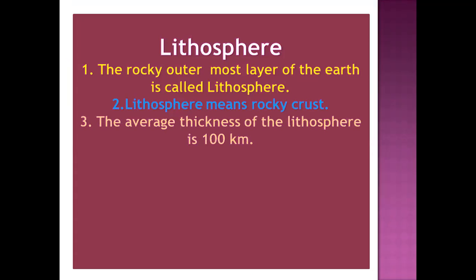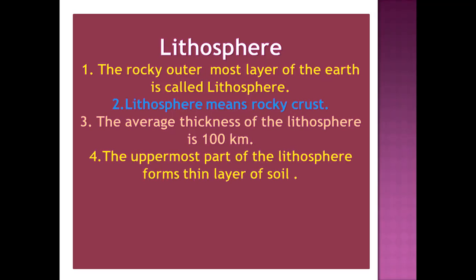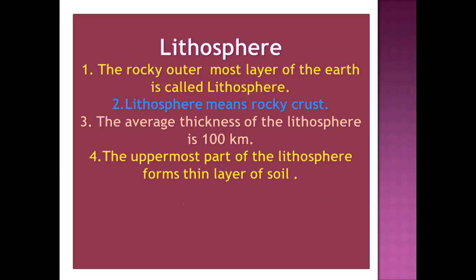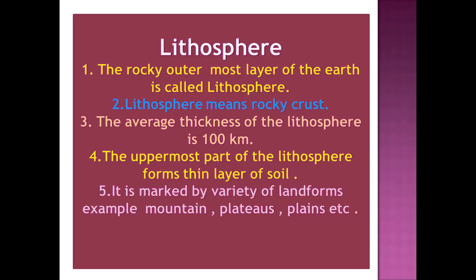Lithosphere means the rocky crust, and the average thickness of this crust is 100 kilometers. The uppermost part has soil, and if we go deeper inside there will be liquid lava — those things do not come under the lithosphere. Only the upper layer of the earth is part of the lithosphere. Landforms like mountains, plateaus, plains, and desert sands all come under the lithosphere — it means the hard surface rocky areas.